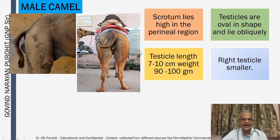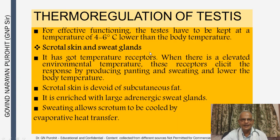In the male camel, the scrotum lies high in the perineal region. The testicles are oval, lying slightly obliquely. Testicle length is 7 to 10 centimeters, weight 9 to 100 grams, and the right testicle is smaller compared to the left.